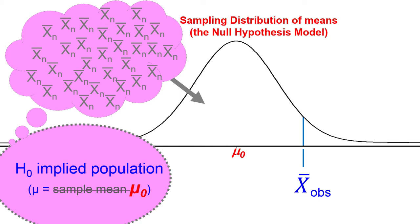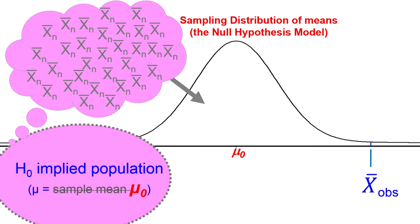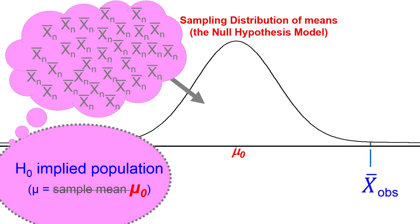Our sample mean could be really far from the null hypothesis, making us think the null hypothesis isn't true because this is unlikely to have happened if the null is true. Or our sample mean could be close to the null hypothesis implied mean, in which case we say this totally could have happened and we will not reject the null hypothesis. The area beyond our sample mean is the p-value — the area under the curve beyond our sample mean in the distribution of all possible means that would have happened if the null were true.